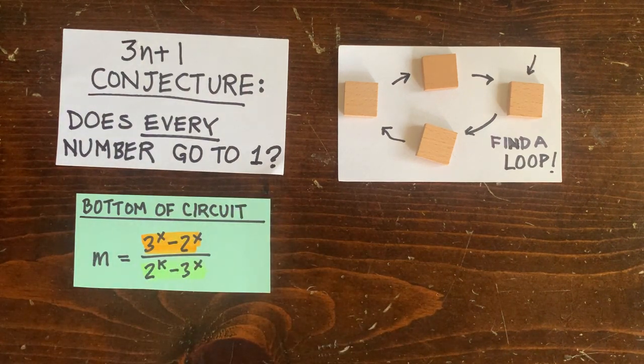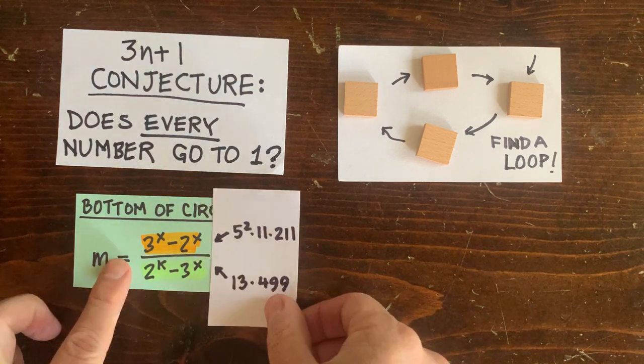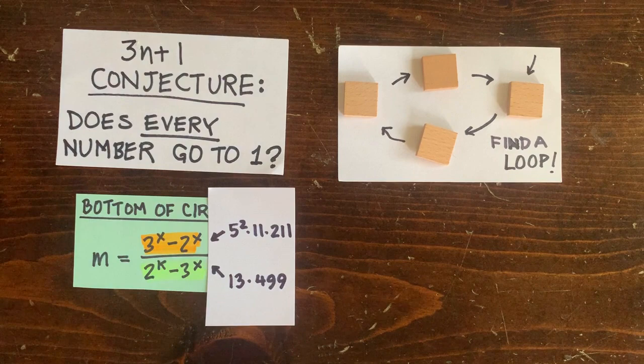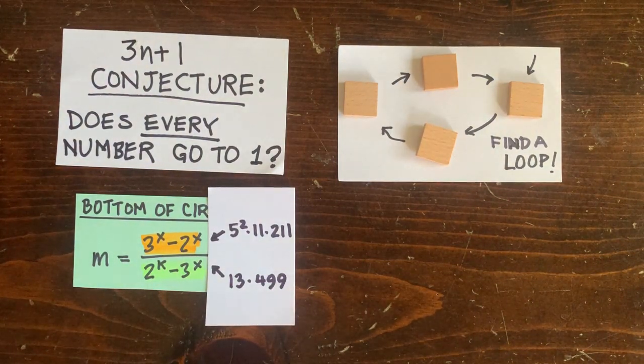And while we were doing that, we got interested in whether the denominator had some factor, say 13, that the numerator didn't have. In that case, the denominator couldn't divide the numerator evenly, and this ratio wouldn't be an integer.